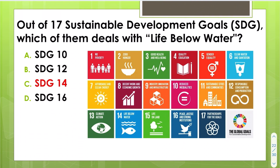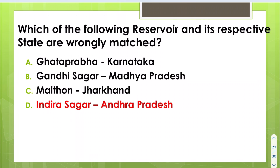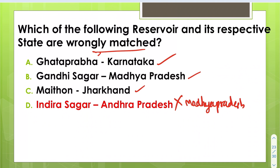The Sustainable Development Goal that deals with life below water is SDG Goal 14. Which reservoir and its respective state are wrongly matched? Ghataprabha is in Karnataka, Gandhi Sagar is in Madhya Pradesh, Maithan is in Jharkhand — those are correct. The wrong one: Indira Sagar is not in Andhra Pradesh; it is in Madhya Pradesh. This question was asked in UPSC Prelims 2022.